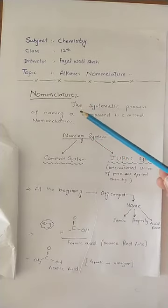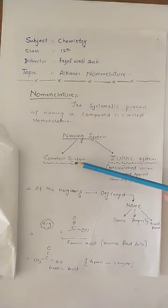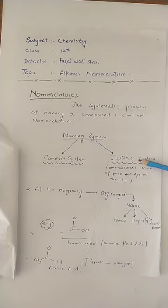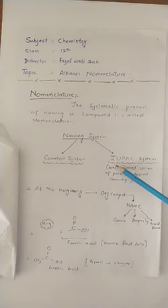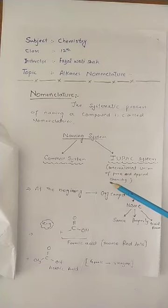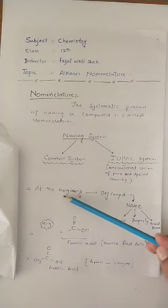So in organic chemistry, naming systems are two types: the common system and IUPAC system. Organic compounds ko jo hum naam dete hain, toh do tarikey se dete hain - ek common system aur ek system hai IUPAC system. Ye jo IUPAC hai, ye is ki abbreviation hai: International Union of Pure and Applied Chemistry.